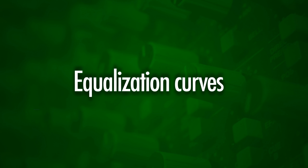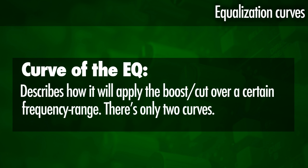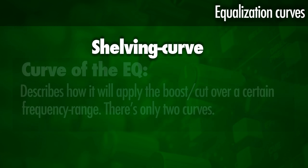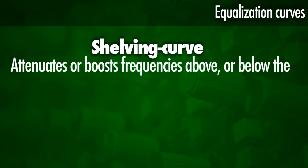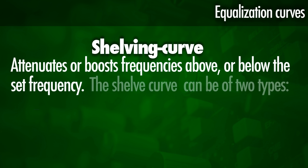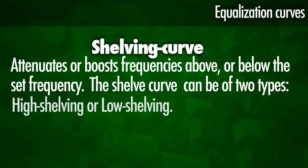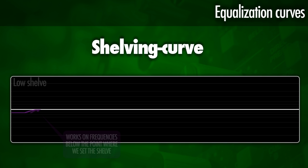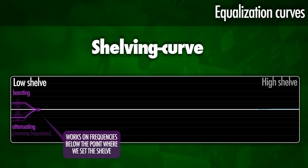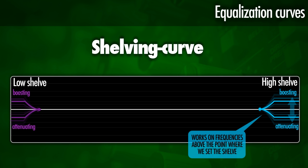Let's start off by taking a look at the different equalization curves. The curve of an equalizer describes how it will apply the boost and cut over a certain frequency range. There are actually only two types of equalization curves. We've got a shelving equalizer curve, which attenuates or boosts frequencies above or below the set frequency. We've got a low shelving and a high shelving — the low shelving works below the set frequency and the high works above it.